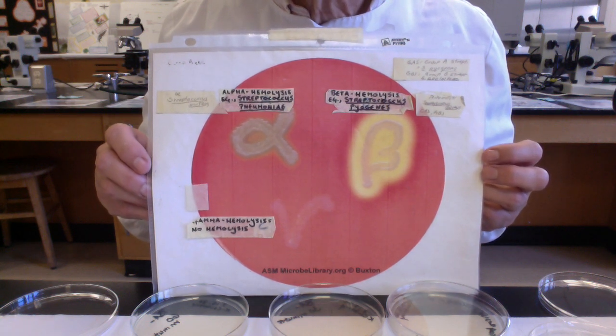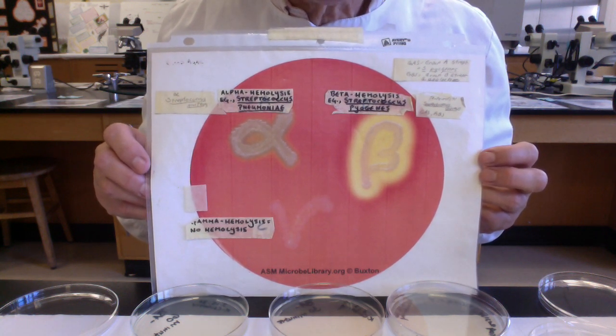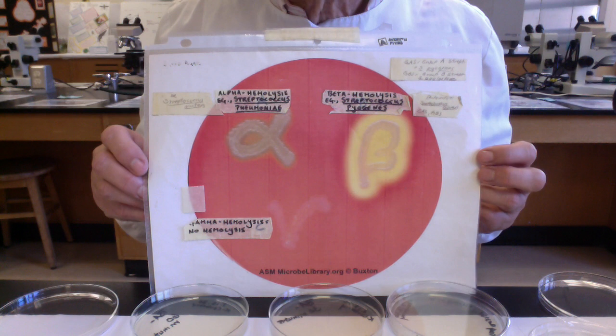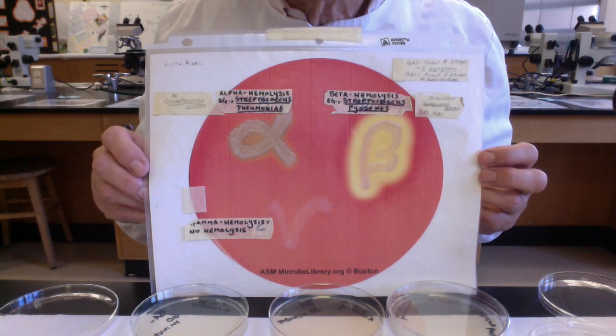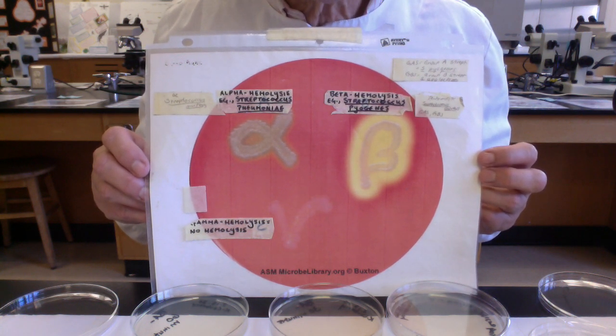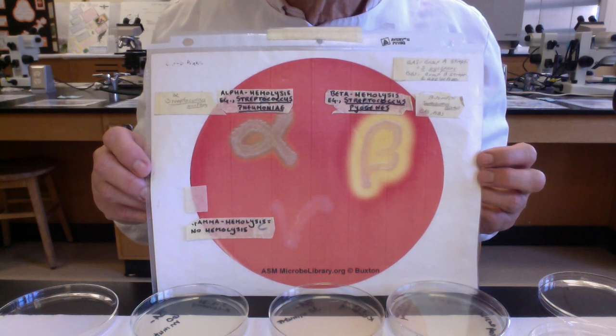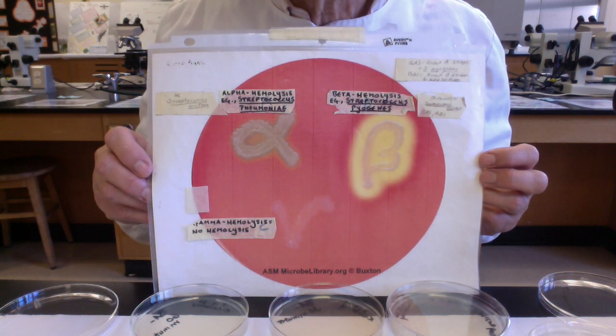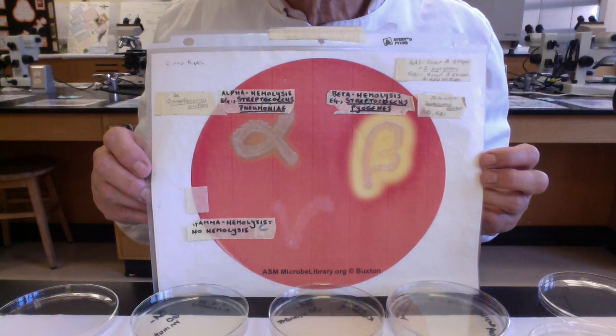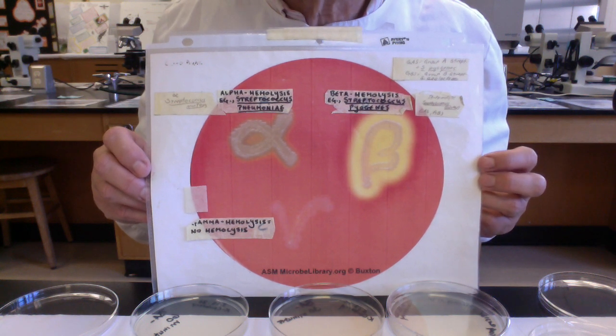Two members of the genus Streptococcus are also beta hemolytic. Streptococcus pyogenes, which causes strep throat, the sore throat. If we did a throat swab and transferred it to blood agar, if Streptococcus pyogenes was present, it would cause beta hemolysis.